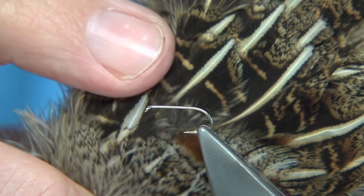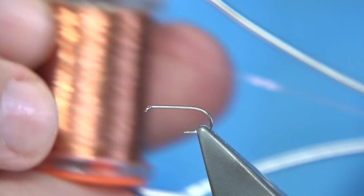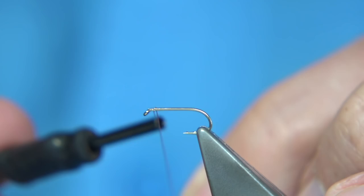Now, the copper wire I'm using is the equivalent to a UTC extra small. Now, what I do is simply give yourself about a mill again, a mill and a bit from the eye and then just work your way down.